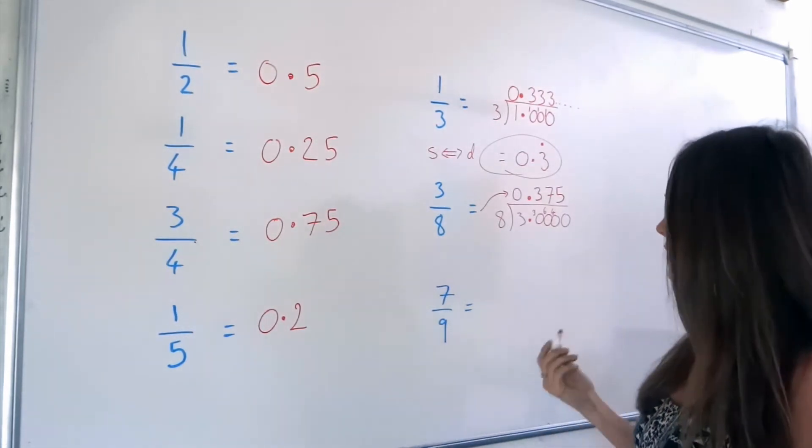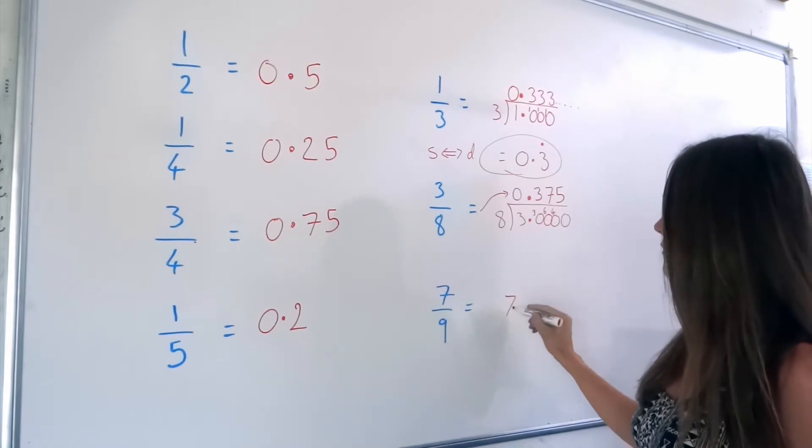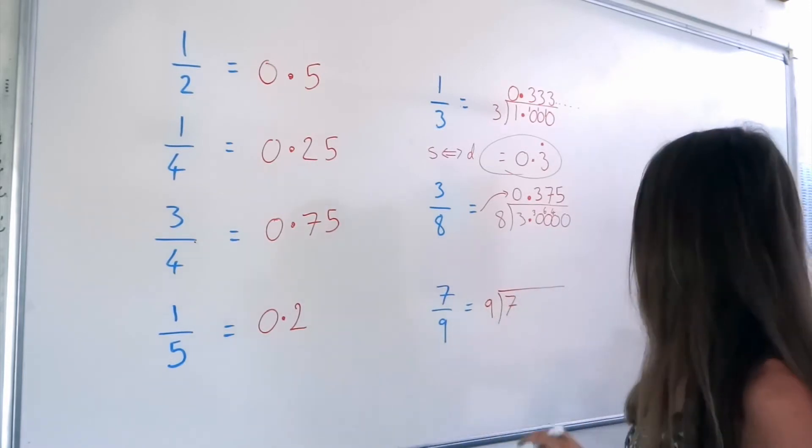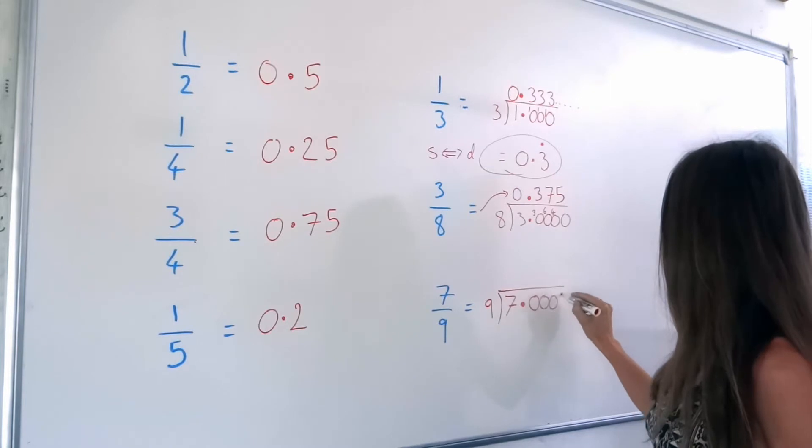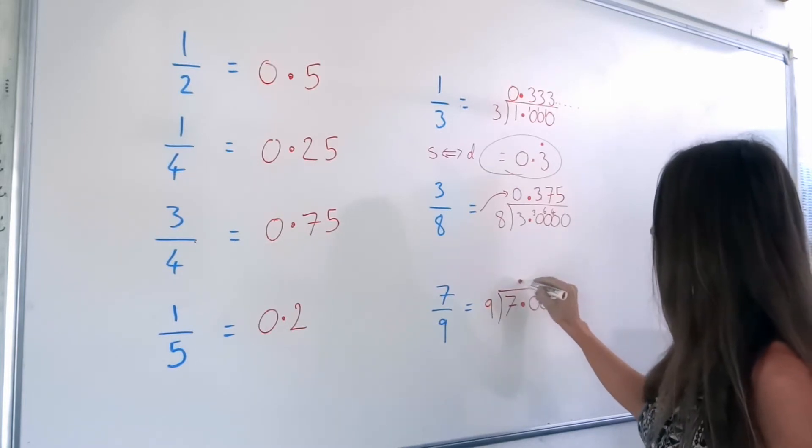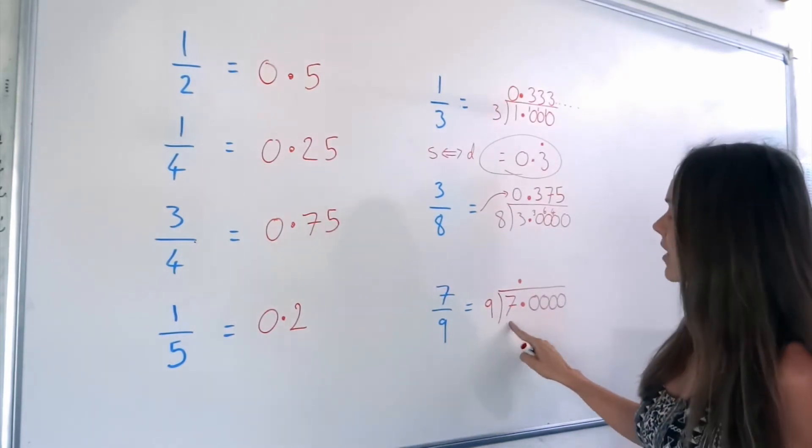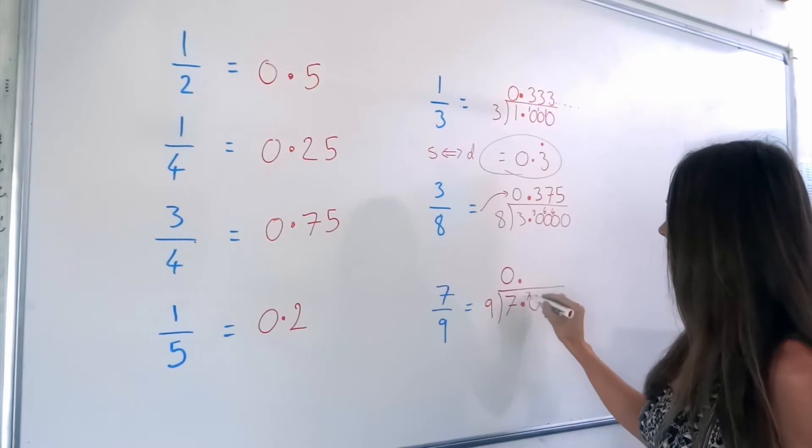On to the last one. So we're doing 7 divided by 9. So 7 goes inside the divide box, and 9, the denominator, goes in front. Don't forget to put your decimal point followed by the zeros, and your decimal point on top as well. And now we can divide. So how many 9's fit into 7? None.